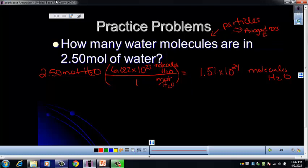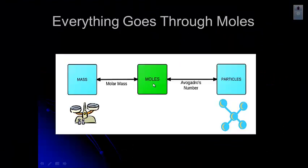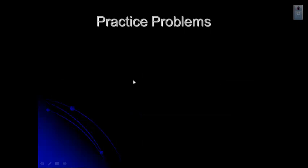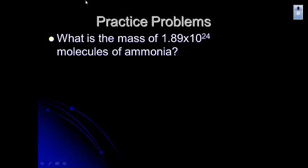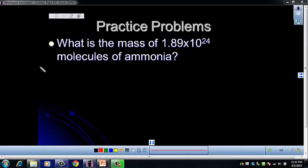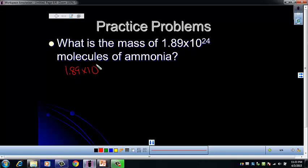Let's look at our flow chart again. We've gone from moles to mass using molar mass, and from moles to particles using Avogadro's number. Now let's put it all together and go from mass to moles and then moles to particles, or vice versa. This problem asks us to find the mass of 1.89 times 10 to the 24th molecules of ammonia. We'll start with molecules, go from molecules to moles using Avogadro's number, then from moles to mass using the molar mass of ammonia.